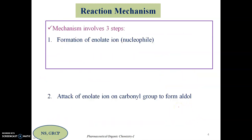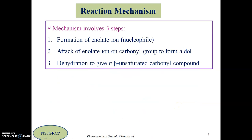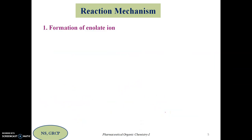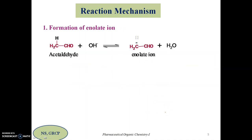Now let us briefly see the mechanism of aldol condensation. There are three steps: the first step is formation of the enolate ion, which acts as a nucleophile; the second step is the enolate ion attacking the carbonyl group to form the aldol; and the third step is dehydration of the aldol to give the corresponding alpha beta unsaturated carbonyl compound.